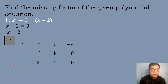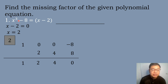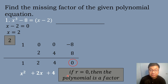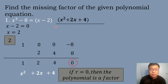We get the depressed equation. We have 1 as our numerical coefficient followed by x. Subtracting 1 from the highest degree of 3 gives the exponent of 2, so the leading term is x squared, followed by plus 2x, then plus 4. The depressed equation is x squared plus 2x plus 4, remainder 0. Since the remainder is 0, the polynomial is a factor. Therefore, the missing factor of x cubed minus 8 is x minus 2 times the quantity x squared plus 2x plus 4.